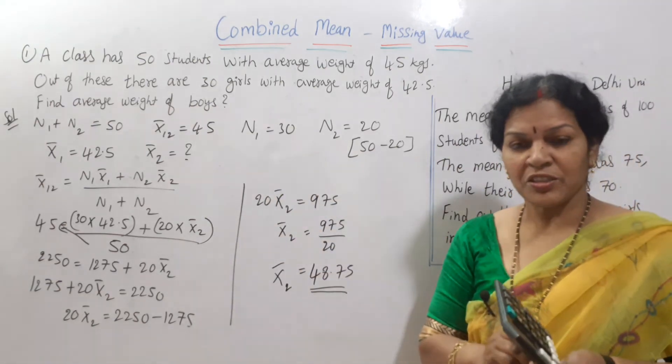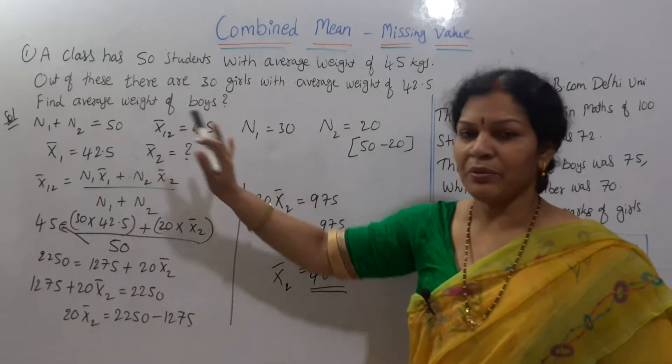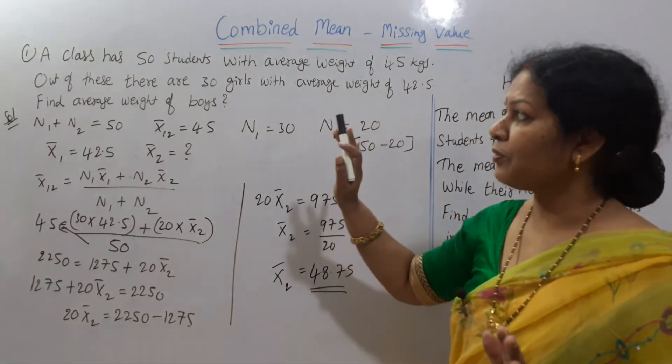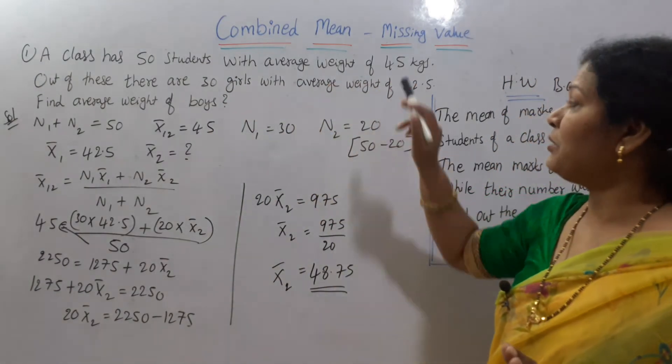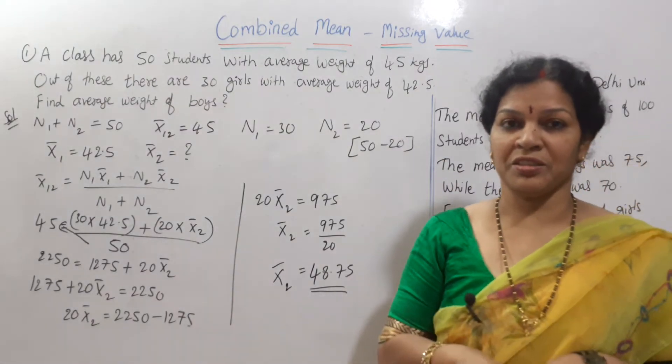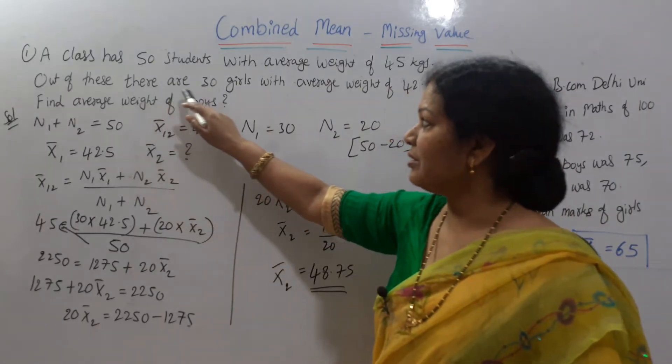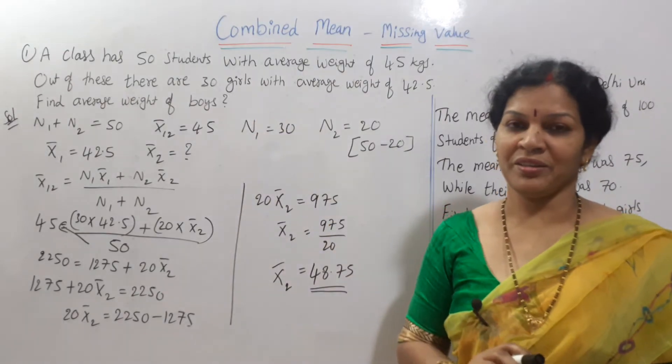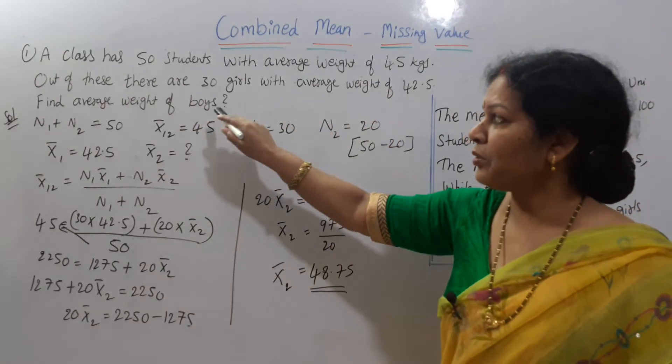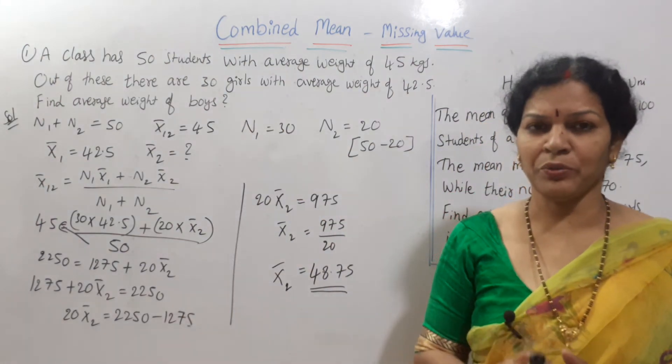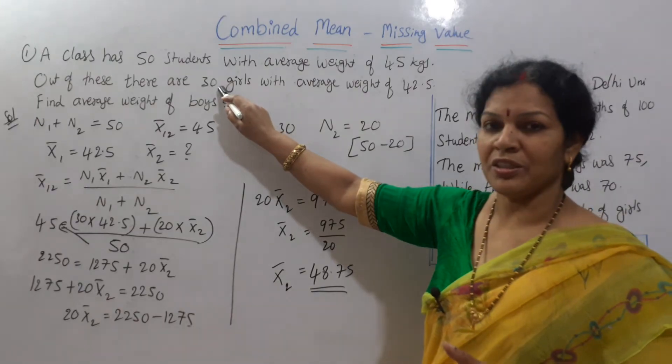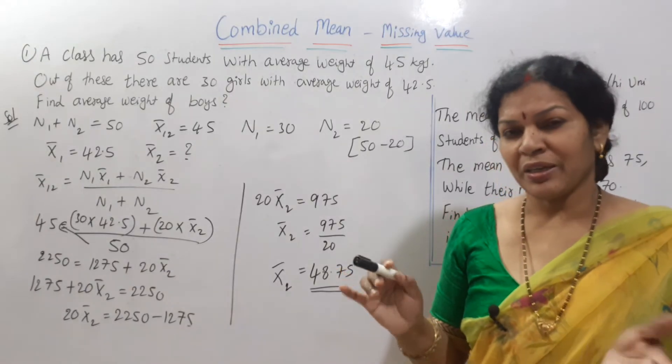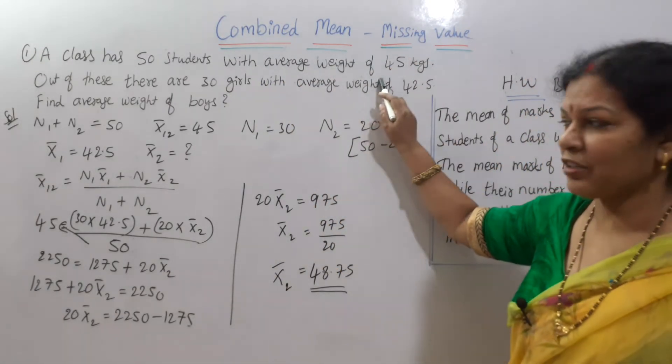Now in this problem, please observe carefully. Never, they never asked about combined mean. The word combined mean is not there. If you read it carefully, a class of 50 students with average weight of 45 kgs, total class weight is 45. Now they are saying out of these there are 30 girls, 30 girls with average weight of 42.5. 30 girls means N1. Their average weight is X bar 1. Find out the average weight of boys. X bar 2 we have to find out. When N1 is 30, out of 50, N2 is 20 as we have done. And X bar 2 we have to find out. Combined mean is given, average weight is given 45, X bar 1,2.